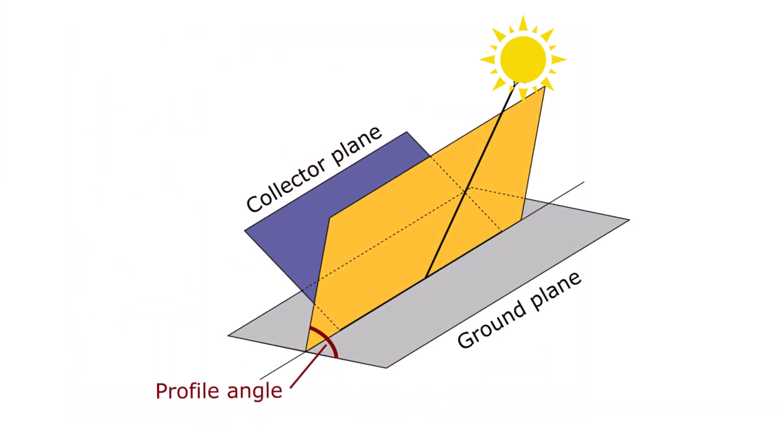The profile angle is the angle between the plane of the ground and the plane composed of the sun rays and the base of the rectangular PV table. Essentially, this represents the height of the sun rays in the 2D cross-section view. This angle determines how shadows are formed when you have several rows and tables of trackers in a system.